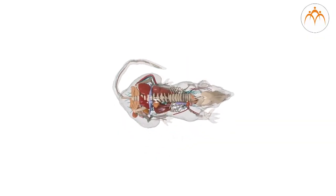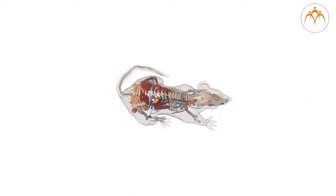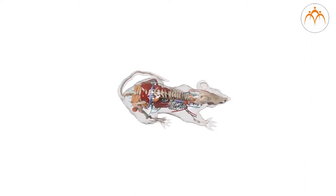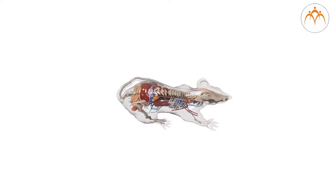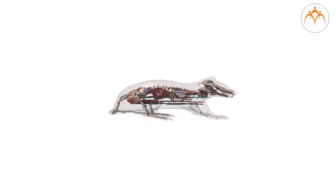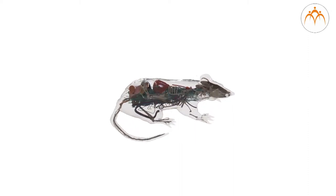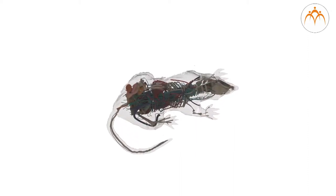When rat is dissected, it is cut open from the lower or ventral side. On this side, various organ systems are present. The digestive system is seen first when rat is dissected. Now let's study the different organs of the digestive system.